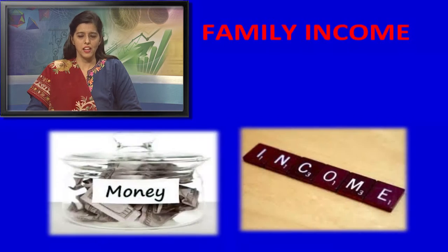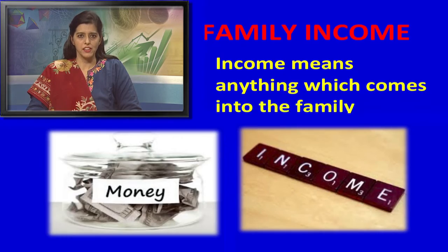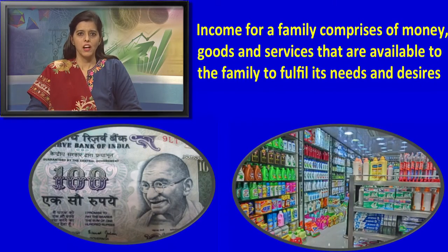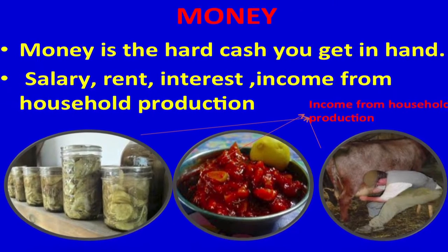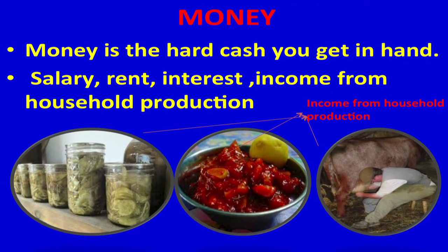Now let's understand family income. Income means anything which comes into the family. Income for a family comprises of money, goods, and services that are available to the family to fulfill its needs and desires. Money is the hard cash you get in hand — salary, rent, interest, and income from household production are the ways by which you get money.